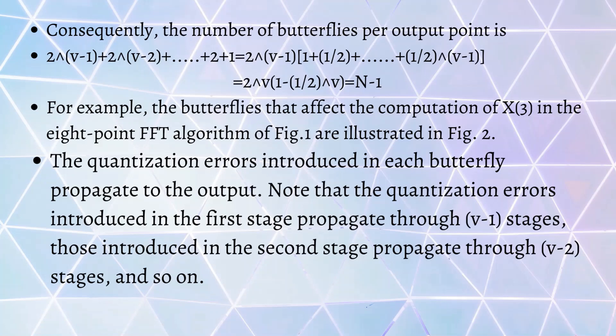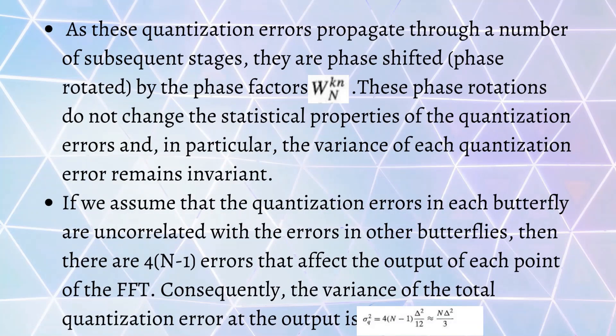This figure I have taken from Proakis textbook. The quantization errors introduced in each butterfly will propagate to the output. We have to note that quantization errors introduced in the first butterfly propagate through V-1 stages, in the second stage propagate through V-2 stages, and so on.